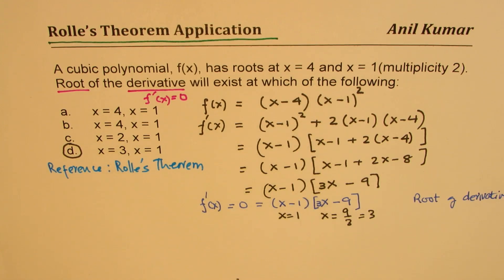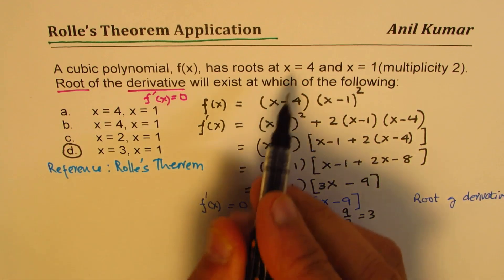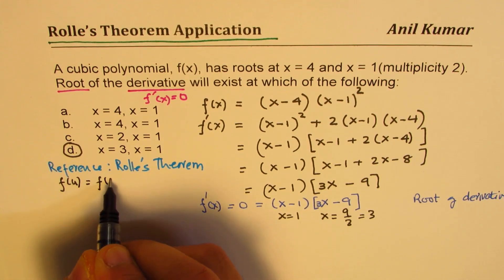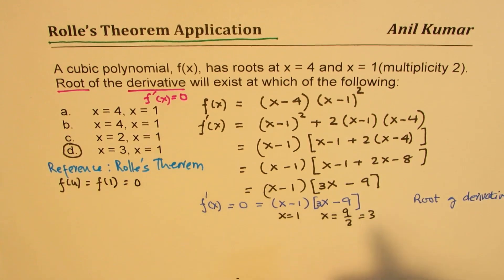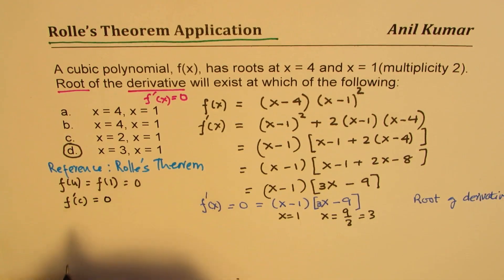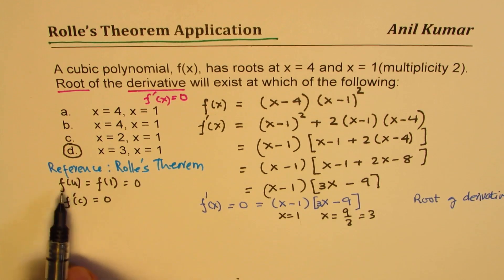So what we understand here is that the value of the function at 4 is equal to value of the function at 1, right? Both are 0. That means there is a value c exists where the derivative is 0, in between, in the interval from 1 to 4.